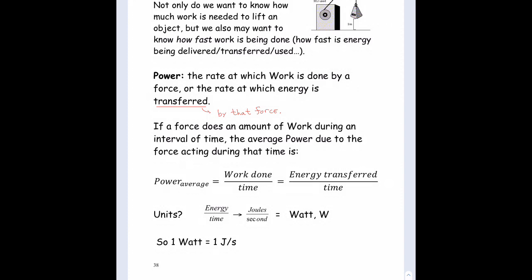We talked about the concept of work — something lifts a mass up and does a certain amount of work. Just like where you work, your boss might have a certain job for you to do, a certain amount of work to be done. It depends whether they want that work done over the next 15 minutes or over the next three weeks. So power is the rate at which work is done. Think of power as the rate at which energy is transferred by a force.